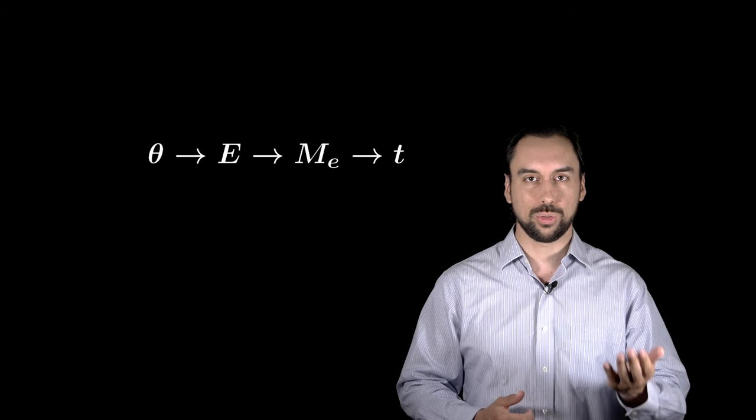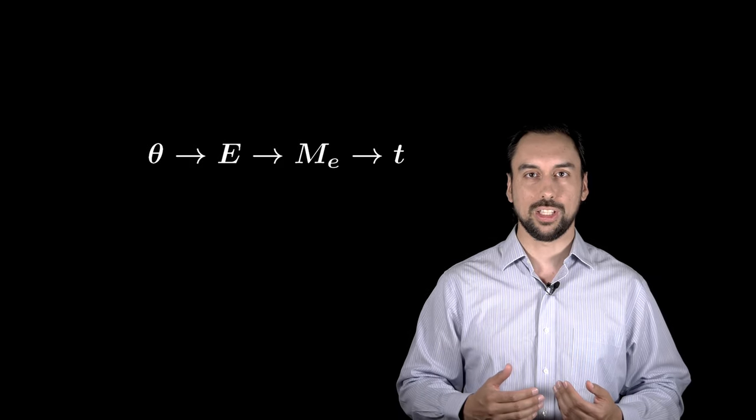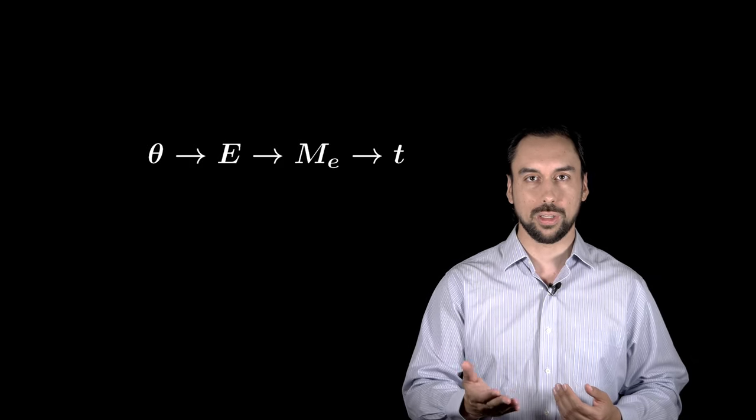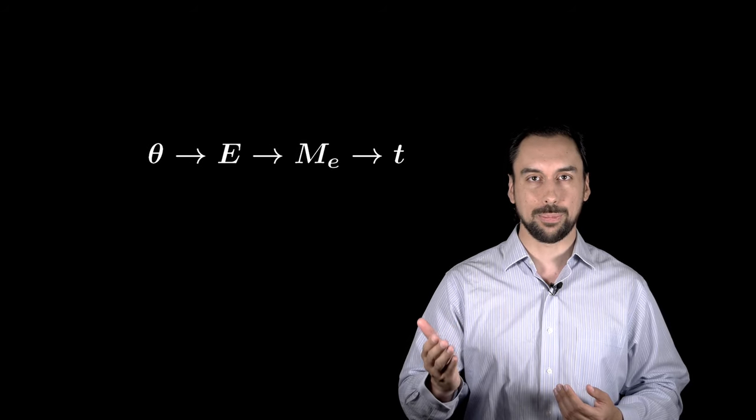In the first problem, if you know the true anomaly, you can obtain directly the eccentric anomaly. And from that, using Kepler's equation, you will get directly the mean anomaly, and with the mean anomaly, you can obtain the time after passing the periapsis.